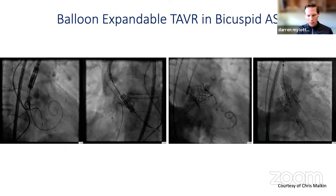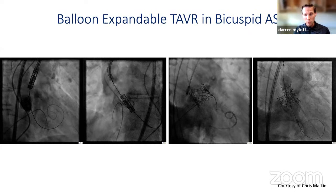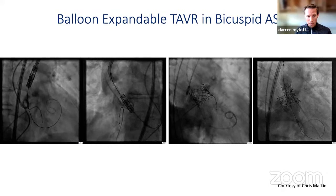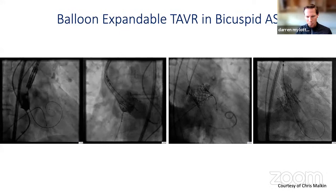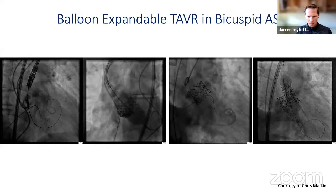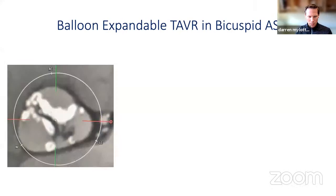Here are some cases I've seen with both balloon expandable and self-expanding valves where bicuspid anatomy has caused major difficulty. Here's an S3 case — typical setup, ready for implantation. The valve is at appropriate depth and expands nicely, but comes up against a big chunk of calcium, which leads to mal-expansion of the valve frame, severe transvalvular leak, and the requirement for a valve-in-valve.